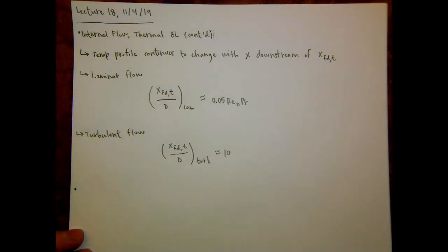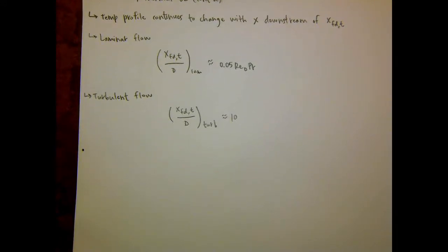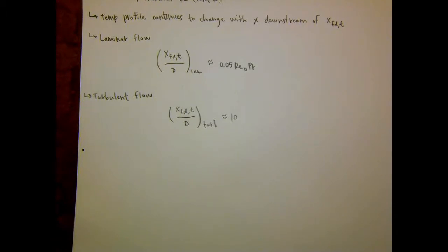Let's talk about what the expression for convection in internal flow is. For external flow it's really simple — it's just Newton's law of cooling: H times A times (Ts minus T_infinity). And Ts and T_infinity are constants and they're usually known, and all you have to think about is calculating the convection coefficient H. But for internal flow, the fluid temperature is now T_sub_M, this mean temperature that's changing with X. So now you have both H changing with X to some extent and the temperature changing with X, so it's not as simple to calculate the convection.